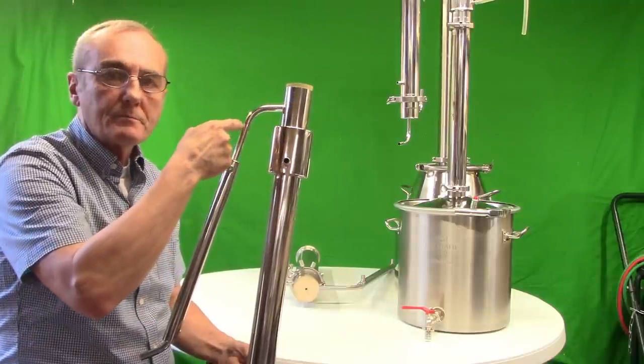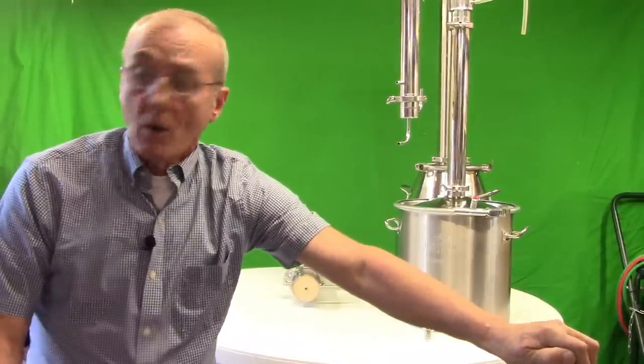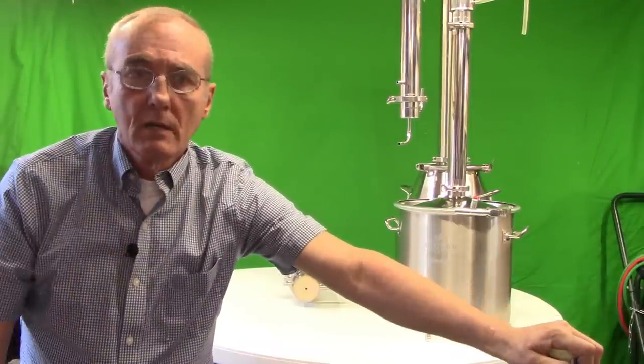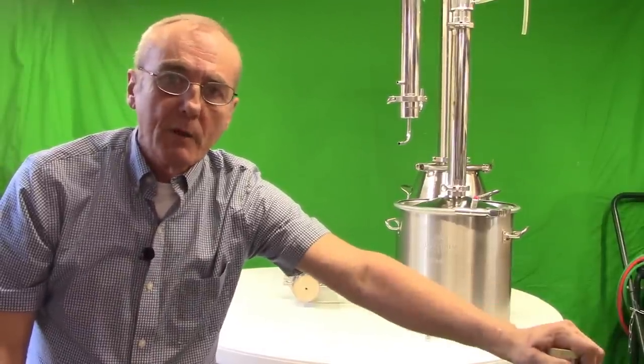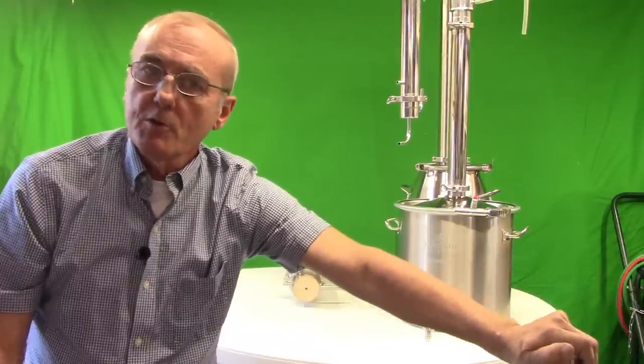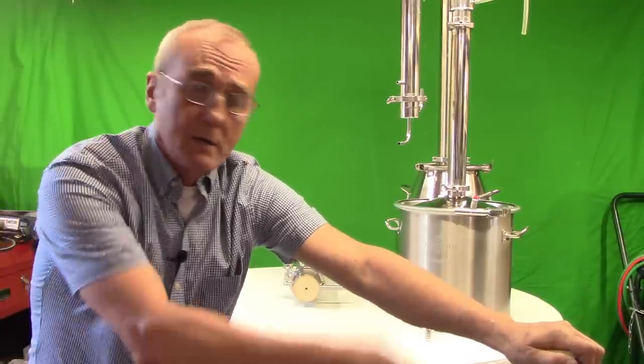What I'm describing is a reflux process, which is a continuous rotation inside your column taking place over and over and over again. It will do that until it achieves the purity that chemically it's going to achieve, and then it will exit your port. That is why a reflux still will produce, on average, 180 proof. And that is why the heads and the foreshots on a reflux still are very easy to determine and identify because of their strength.